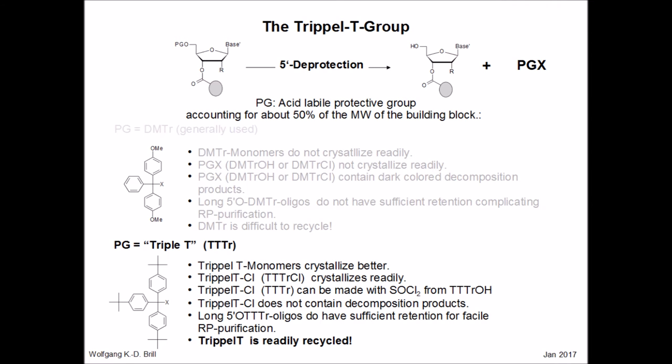In turn, the properties imposed by the tristiboodletrityl — or triple-T — group are somewhat different. Triple-T monomers crystallize much better than dimethoxytritylated ones. Triple-T chloride crystallizes readily. Tridyl-T chloride may also be readily obtained upon treatment of the tritylated reaction products of the detritylation reaction — or the tristiboodletrityl alcohol — with thionyl chloride. This product will be obtained without discolored decomposition products.